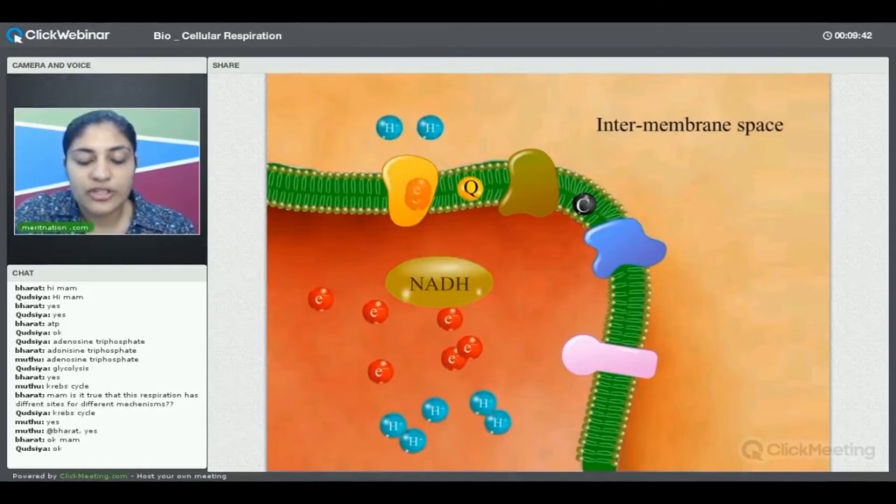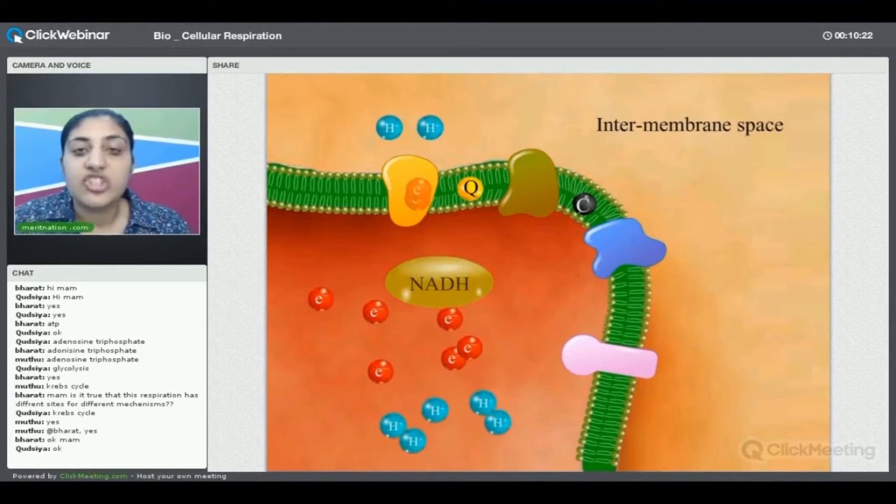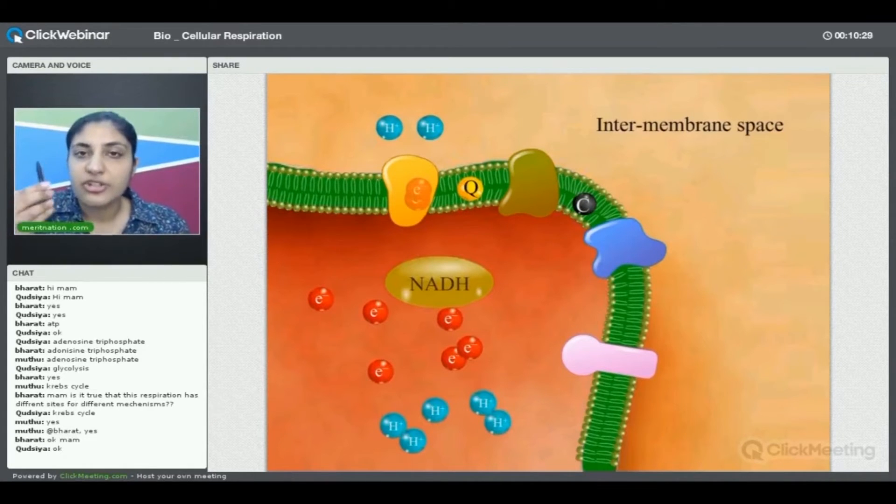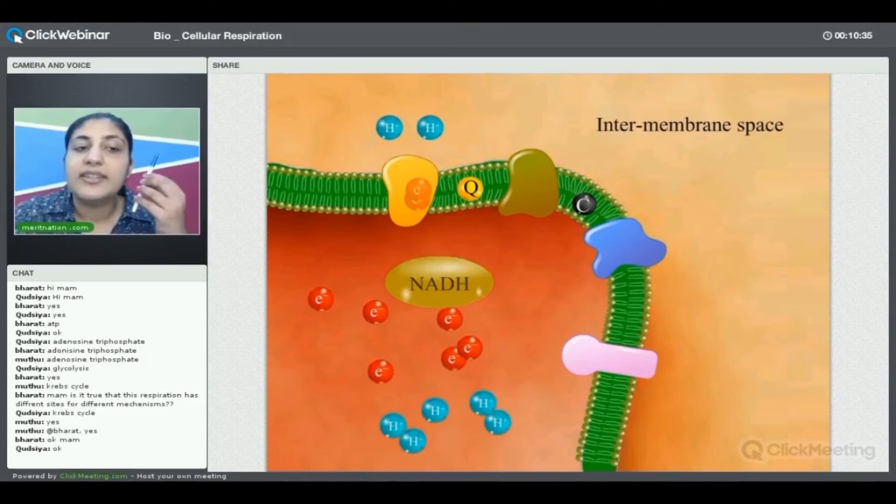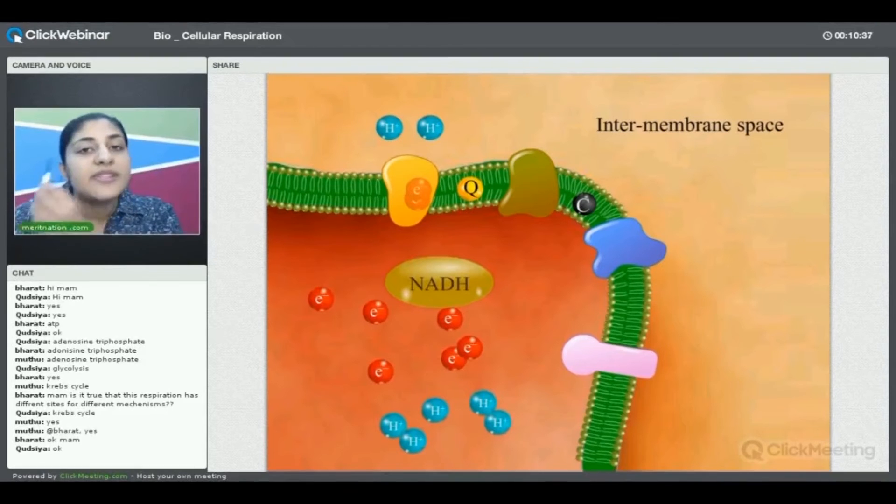In this process, as you can also see, two protons are being transferred from the matrix region towards the intermembrane space. This electron transport chain is basically a sequence of different redox reactions in which we have an electron donor giving electrons to an electron acceptor. In the second step, this electron acceptor becomes the electron donor to the next more electronegative molecule.